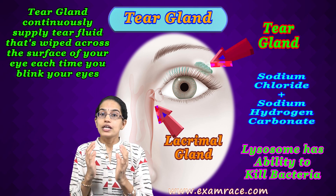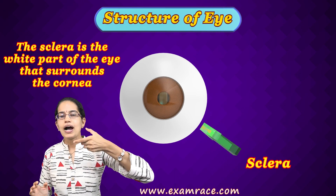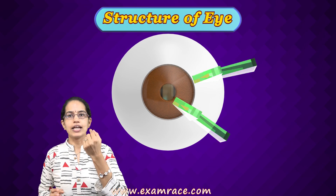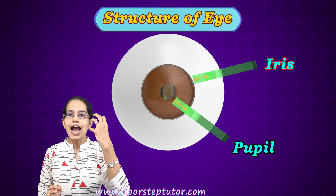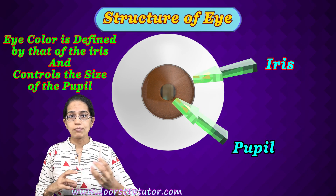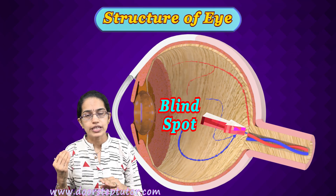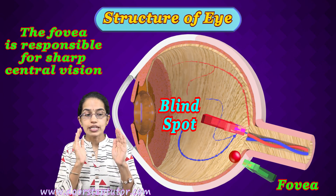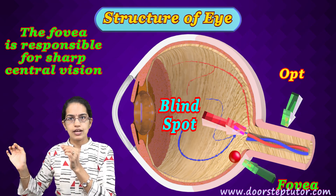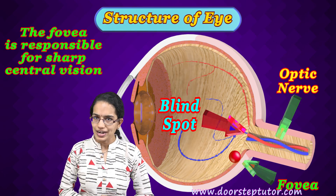A quick recap of the structure: the outermost layer is the sclera, which is the white tough coating. The front part of this sclera is transparent and that is the cornea. Inside the cornea we have two concentric rings — the innermost ring is the pupil, and outside the pupil is the iris, which gives you the color of the eye. Then we have the blind spot where there is no vision, and the fovea where you have the brightest and clearest vision. Finally, it connects to the optic nerve, which sends the light signal into an electrical signal. This is the whole concept of the eye.